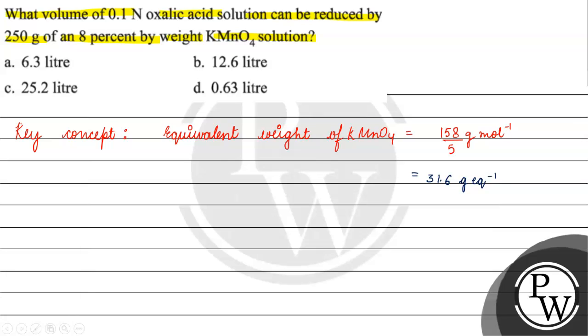For this question, we will use N1V1 equals N2V2, where N1 is normality of oxalic acid, V1 is the volume of oxalic acid, N2 is normality of KMnO4 solution, and V2 is volume of KMnO4 solution.